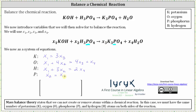For the next step, let's write these equations as homogeneous equations by setting the right side equal to zero. The first equation becomes x sub one minus three x sub three equals zero. The second becomes x sub one plus four x sub two minus four x sub three minus x sub four equals zero. The third is x sub one plus three x sub two minus two x sub four equals zero. And the last equation is x sub two minus x sub three equals zero.